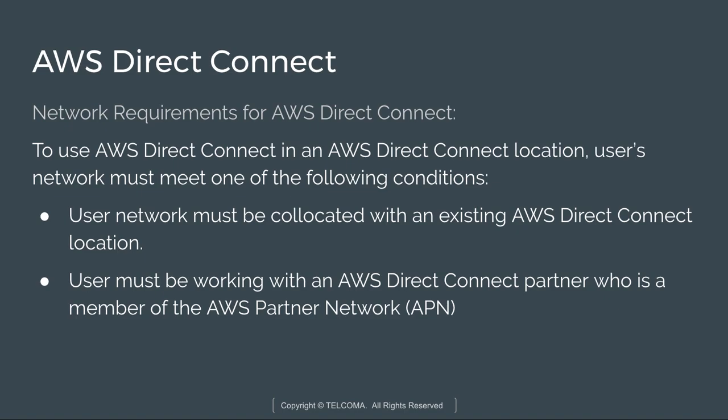To use AWS Direct Connect, the user network must meet these conditions. The very first is that it must be co-located with an AWS Direct Connect location. The user must be working with an AWS Connect partner who is a member of APN, the AWS Partner Network, or the user must be working with an independent service provider to connect with AWS Direct Connect.